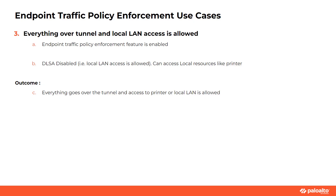In this third use case, you can use the endpoint traffic policy enforcement feature set to 'all traffic'. The 'no direct access to local network' is disabled, meaning local LAN access is allowed — we can access local resources like a printer in this case. The outcome is that everything goes over the tunnel — all TCP/UDP and ICMP traffic — but access to the printer or local LAN is allowed over the physical interface.